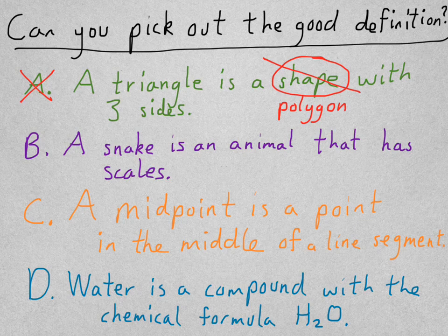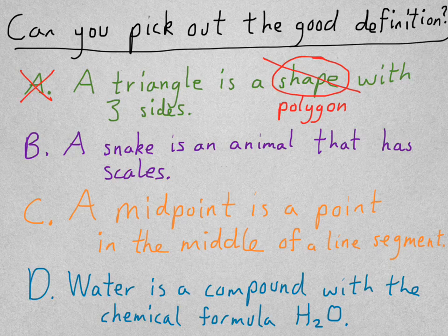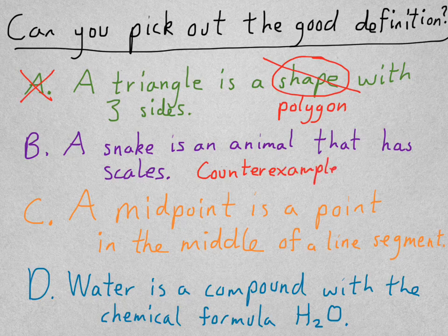Alright. What about B? A snake is an animal that has scales. Well, not all animals that have scales are snakes though. I can think of a counter example. That would be a fish. So, that's a good description of a snake, but it's not a good definition. We couldn't write that as a true biconditional.